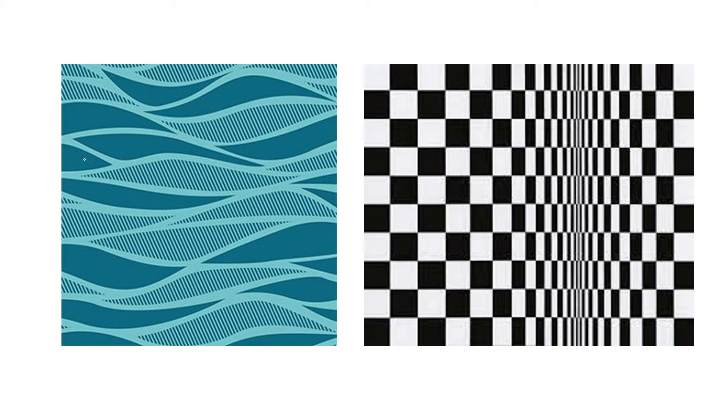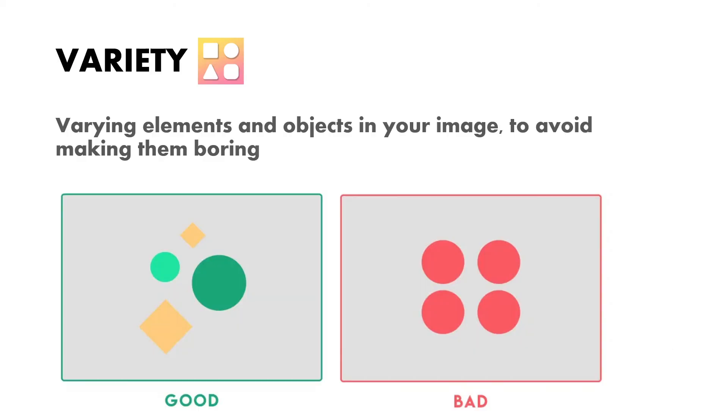When you see rhythm examples, you feel like some movement is happening in your eyes, or a vibration-like feeling — that is the effect of rhythm in a composition.